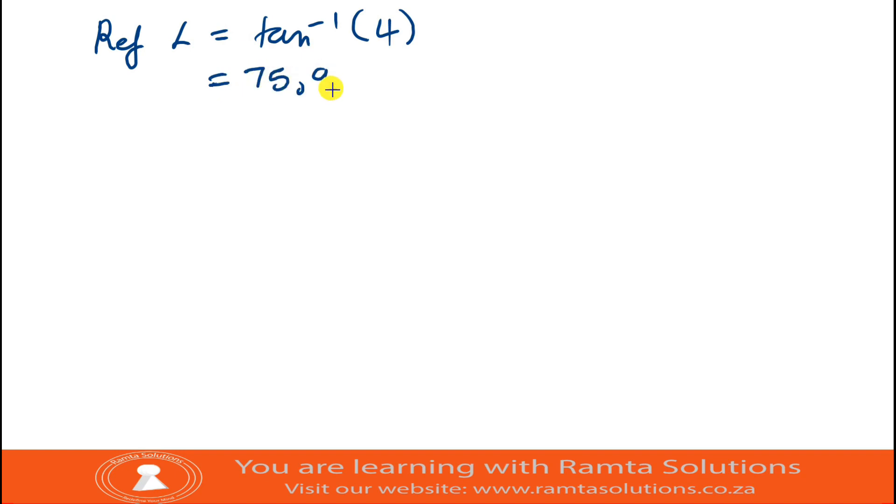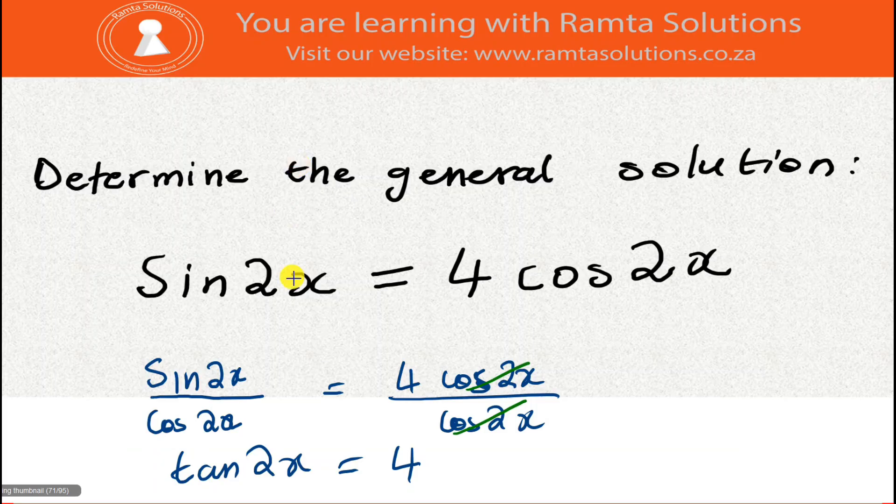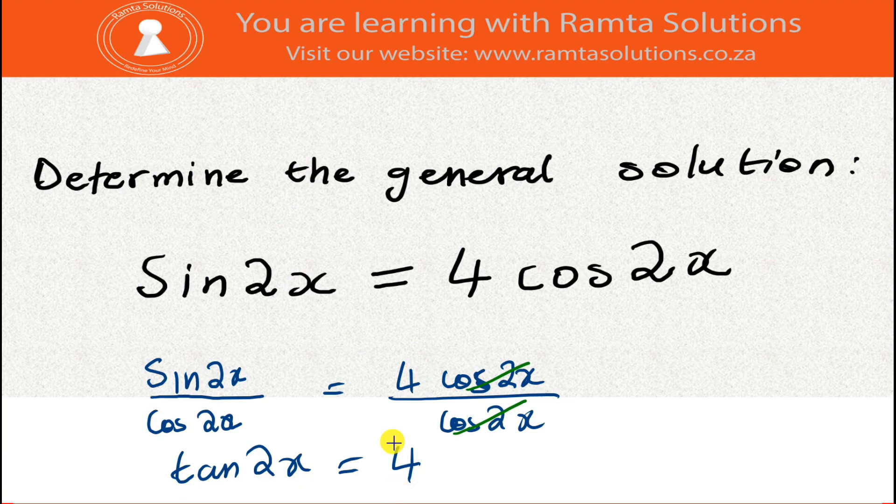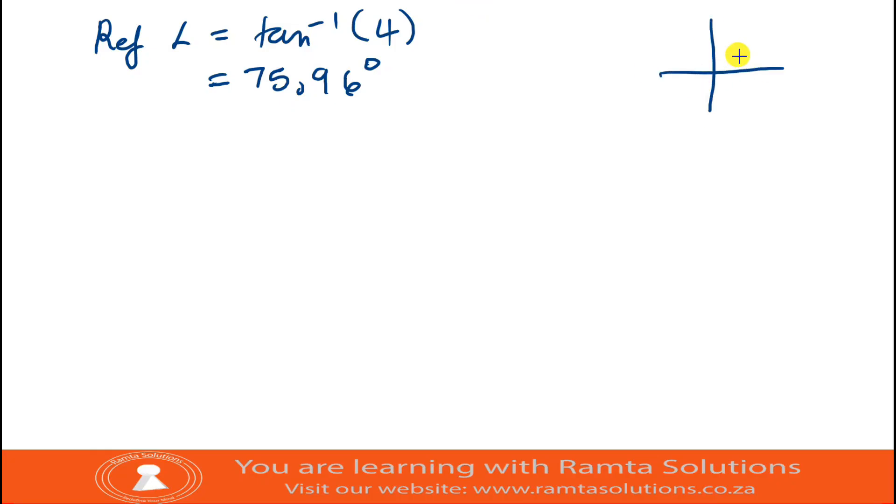Since tan 2x equals 4, when you look at your CAST diagram (All Students Take Coffee), tangent is positive in the first quadrant and the third quadrant. In the first quadrant, we take the value as it is, so 2x equals 75.96 degrees.